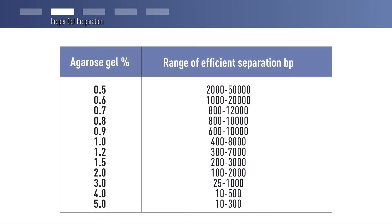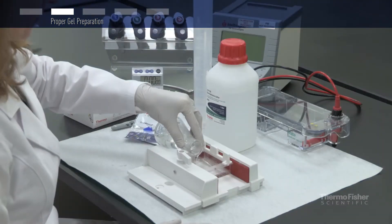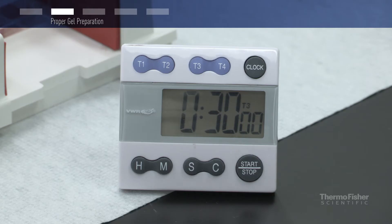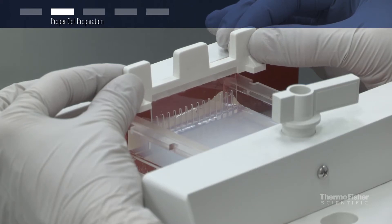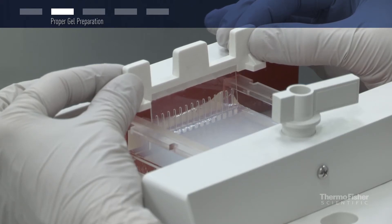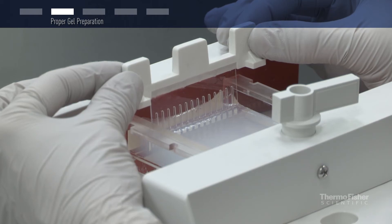Always prepare the appropriate gel concentration according to the sizes of the DNA fragments you want to analyze. After pouring your gel, be patient and wait until it is fully solidified. When pulling out the comb, be gentle and slow. Pull the comb straight out of the gel with constant and even force.